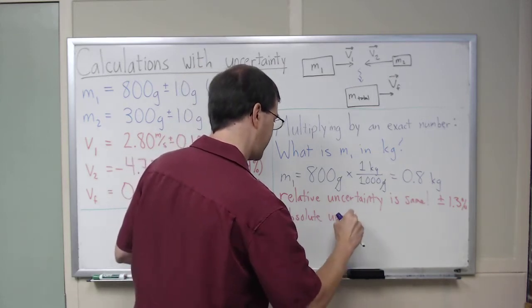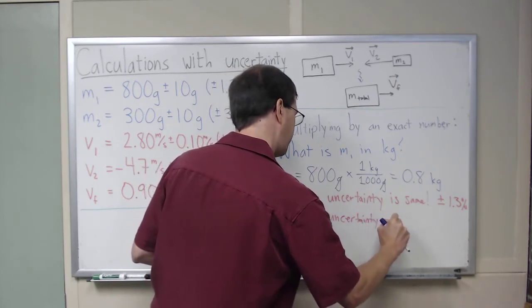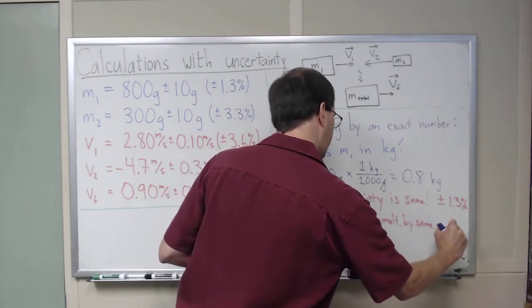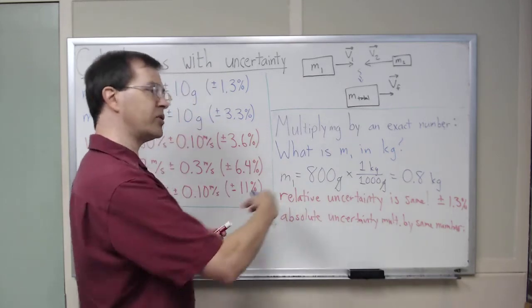Uncertainty is multiplied by the same number. And so, in particular, when we do this calculation,